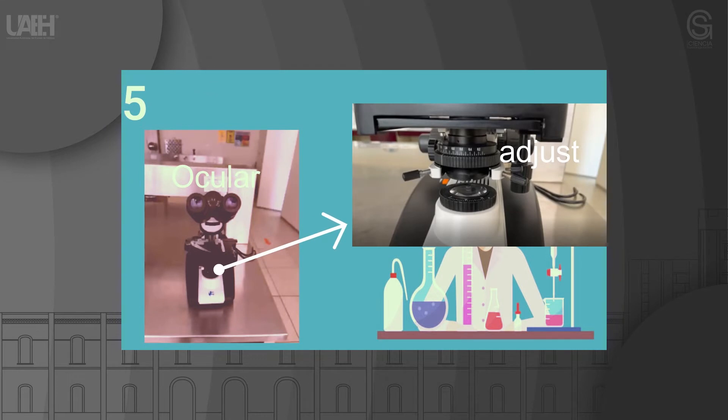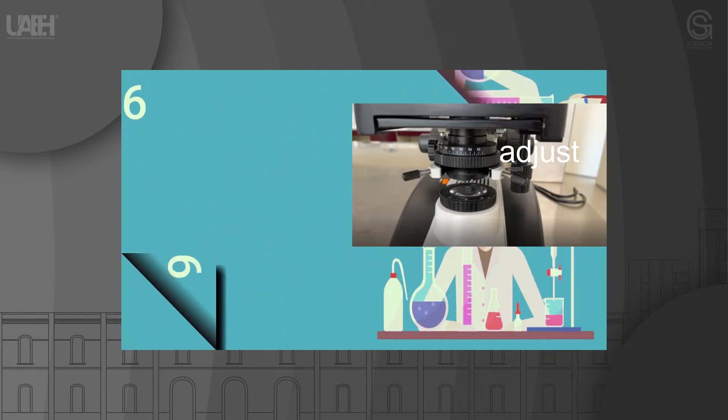Step 5: Looking through the eyepiece, adjust the condenser and the diaphragm to maximize the amount of light reaching the sample. Some microscopes have a small mirror that directs the light onto the sample. If this is the case with your microscope, also adjust the position of the mirror so that the sample is fully illuminated.